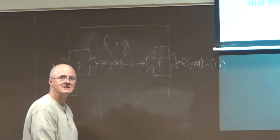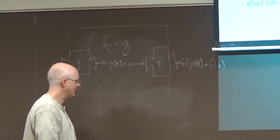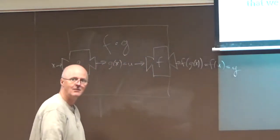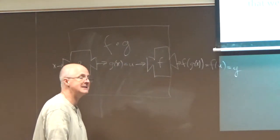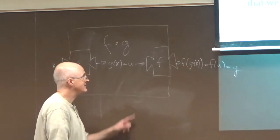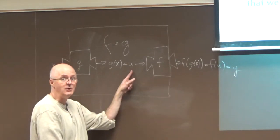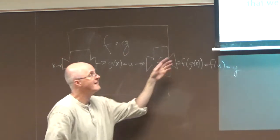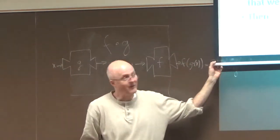Now nudge x by dx. What do we ultimately want to find? We want to find out how much y gets nudged. Where y is f of u is f of g of x. There's this intermediate stage. u gets nudged first, so to speak.